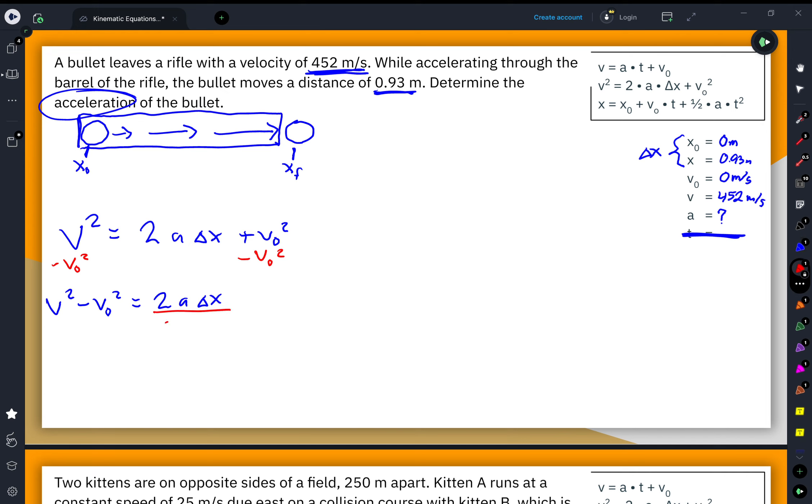That's equal to 2a delta x on the right side. To isolate the a even further, I will divide both sides by 2 times the displacement. That ends up canceling out the 2 and the displacement on the right hand side, which means v squared minus v naught squared all over 2 delta x is equal to our acceleration. So this is an algebraic way of solving this problem.